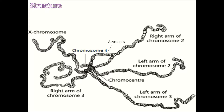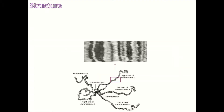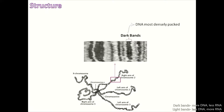Another feature of polytene chromosomes is their banding pattern — full-length bands like a barcode. There are dark bands and light bands. In the dark band regions, the DNA is most densely packed. Between the dark bands are light bands, also called interbands, where the DNA is less densely packed.